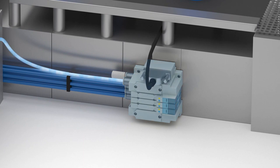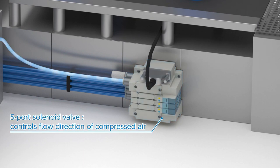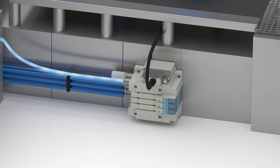Directional control valves, in this case 5-port solenoid valves, are used to control the direction of the air flow.